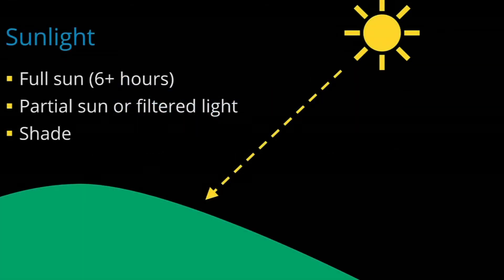All plants need sunlight in order to grow, but different plants prefer different amounts of light. In order to determine what plants will be best in your space, you want to consider how much light you have available. A garden that receives at least six hours of sunlight a day is considered to be in full sun. Many plants do well in full sun, and if you're interested in growing vegetables or other plants for food, you will want to make sure that your garden is located in a bright and sunny place.